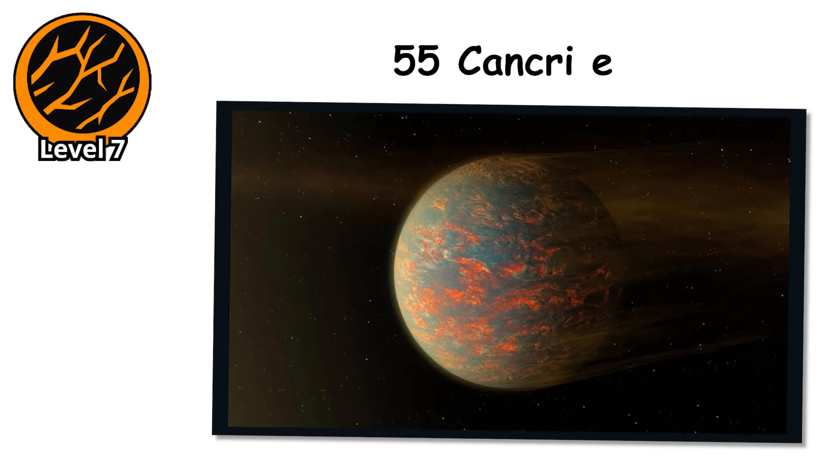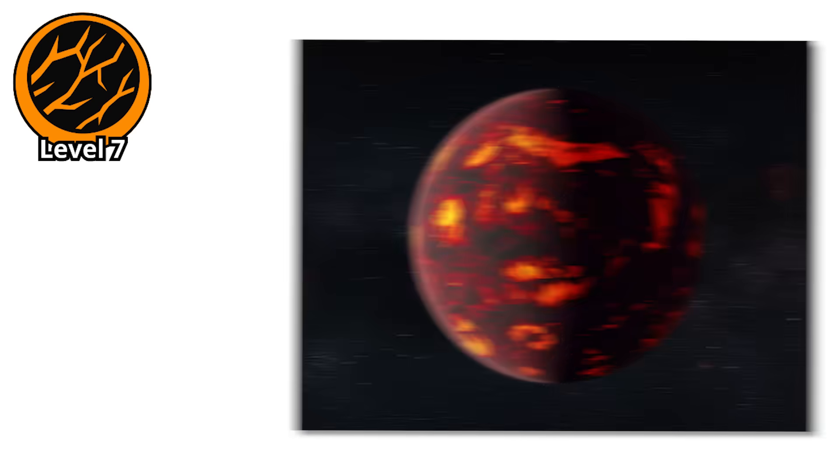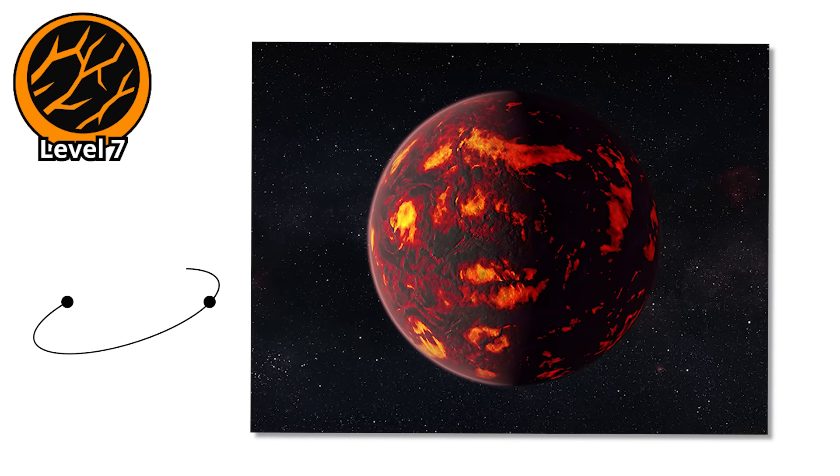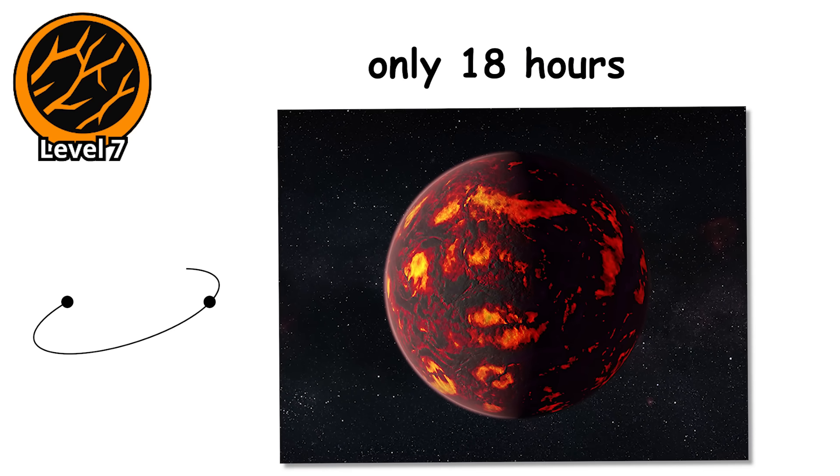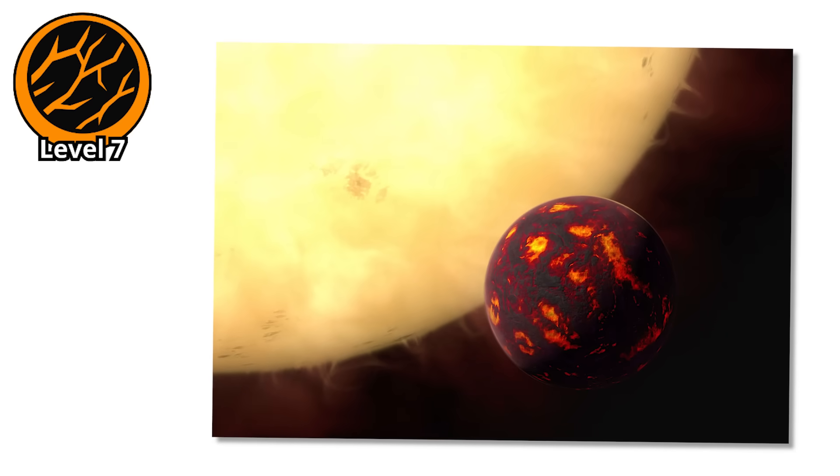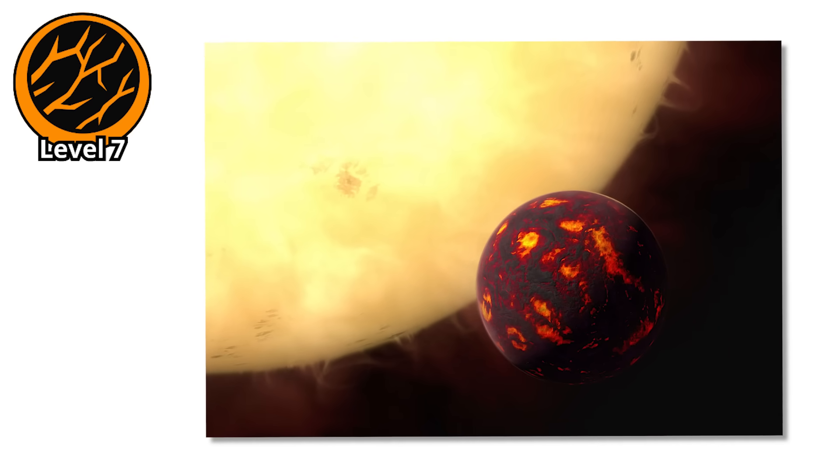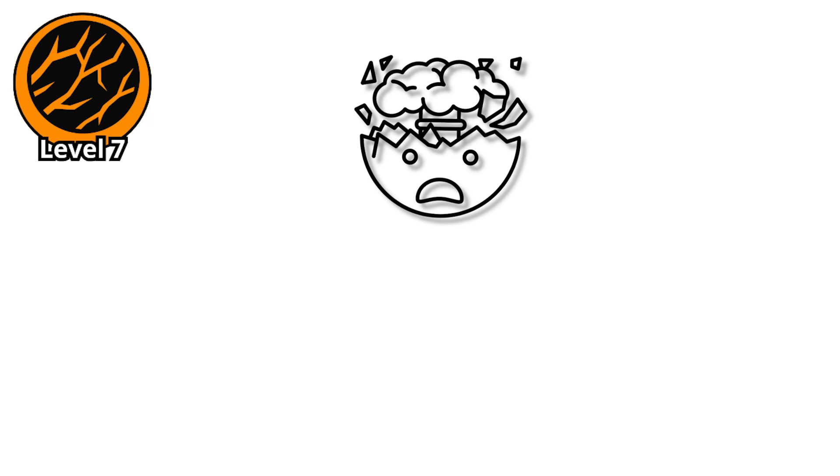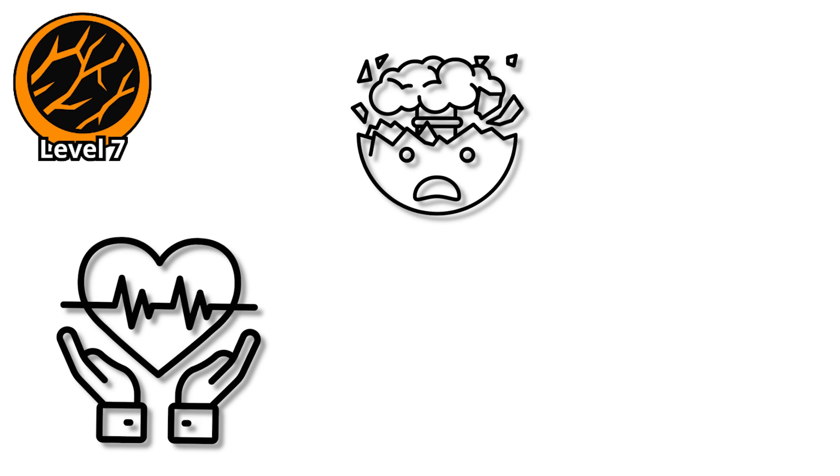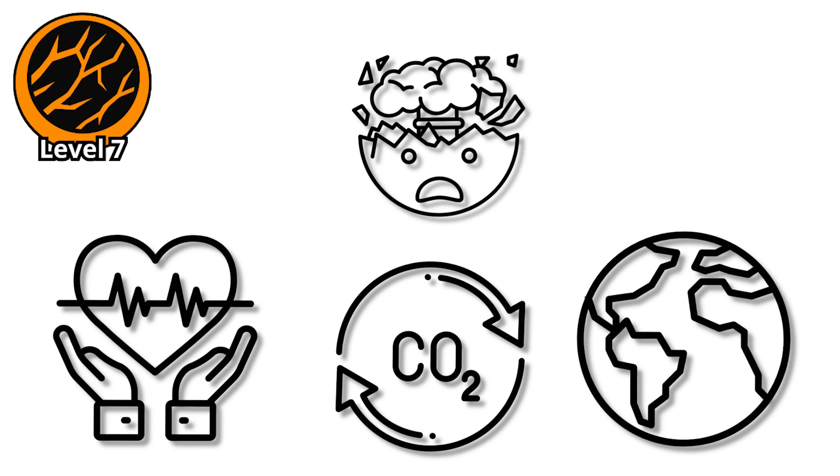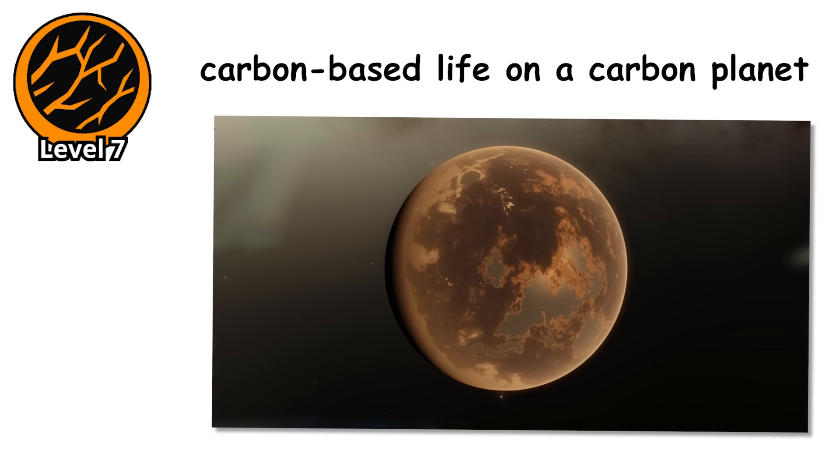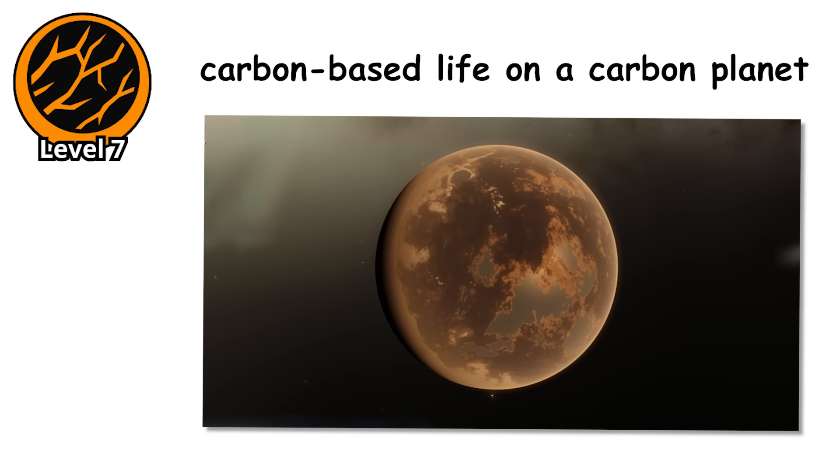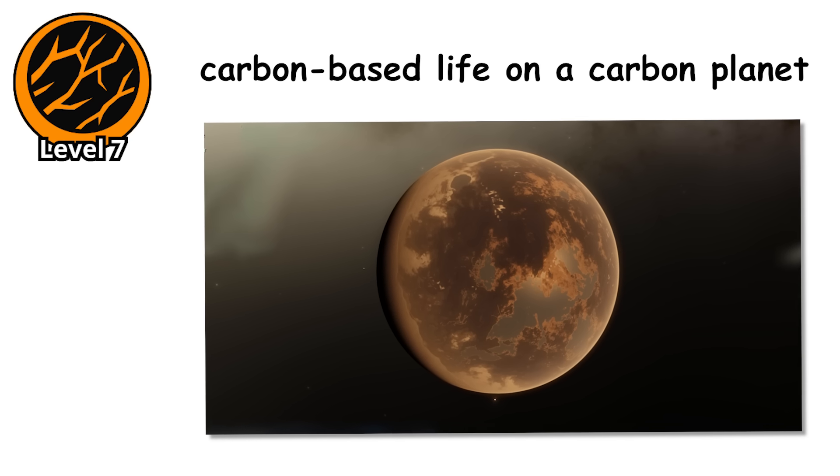55 Cancri e is a prime candidate. It's a super-Earth orbiting so close to its star that its year lasts only 18 hours, and spectral analysis suggests it might have a carbon-rich composition. If true, its interior could contain more diamond than all of Earth's crust combined. The really mind-bending part is thinking about whether life could exist in such a world. Carbon is the basis of life as we know it, but carbon-based life on a carbon planet would be chemistry operating under completely different rules.